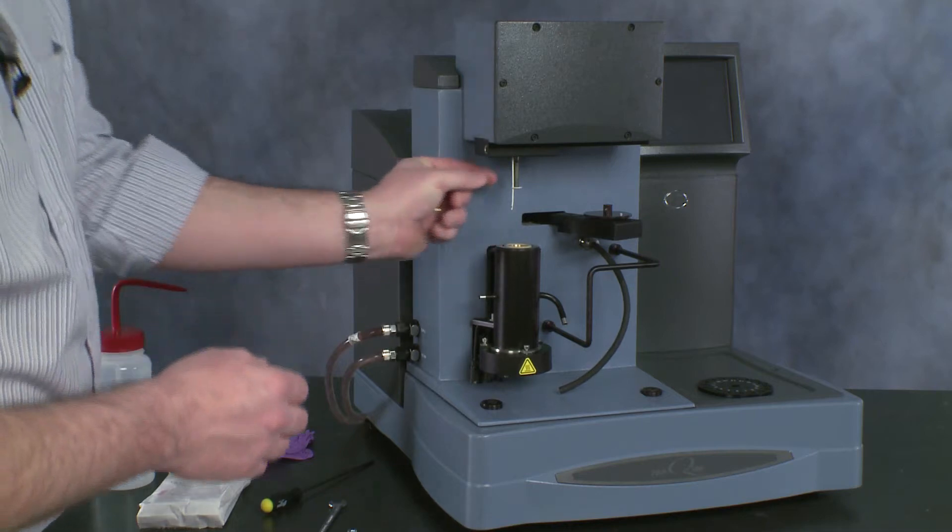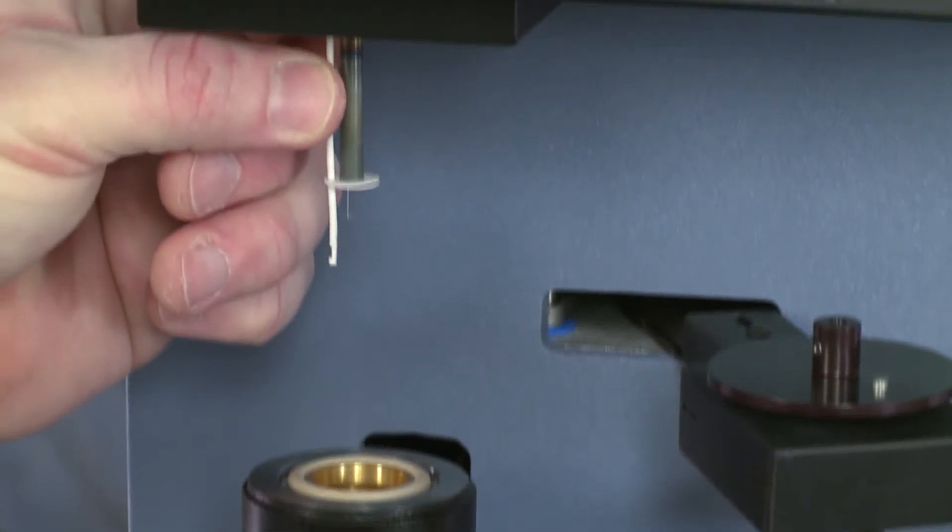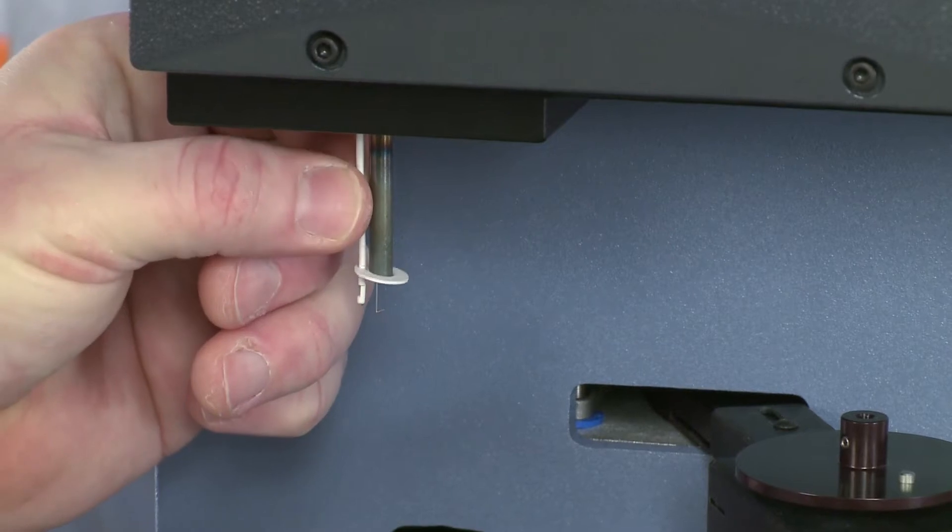To help removing the jacket, we lift the thermocouple up so that it's out of the way, remembering where it was so we can put it back in the same position afterwards.